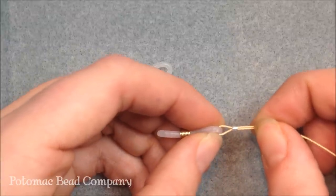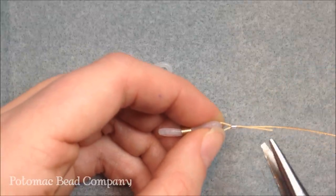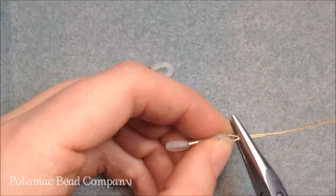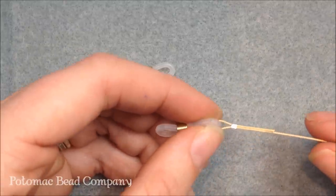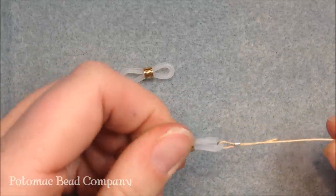Once you have that in place there, you're just going to take your flat nose pliers, give a little squeeze, and flatten out that crimp tube. You can put a crimp bead cover on it if you want for a little bit more decorative look.